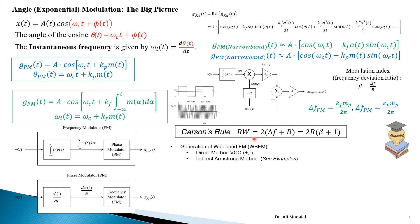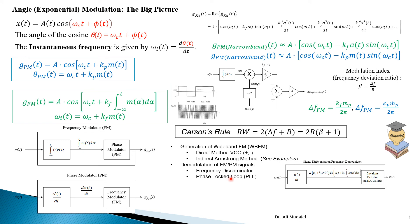We also learned how to generate wide band FM using the direct method, which is expensive and non-stable, and then the Armstrong indirect method. For reception, we covered demodulation examples using a frequency discriminator or a differentiator, and we can also use a phase locked loop — both work well. A differentiator will make the signal not just FM but FM and AM at the same time, which allows the use of envelope detection with DC blocking.